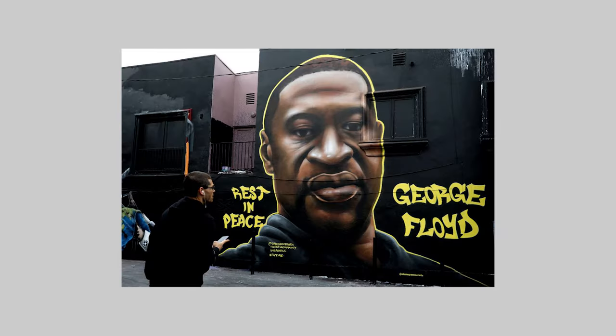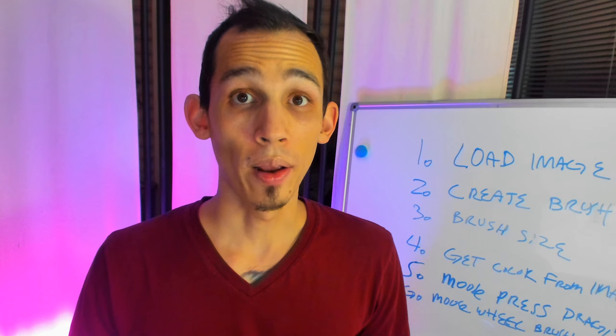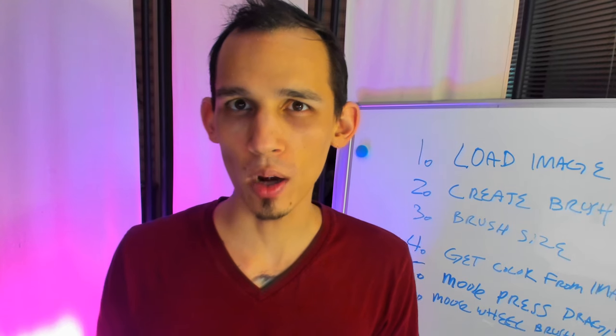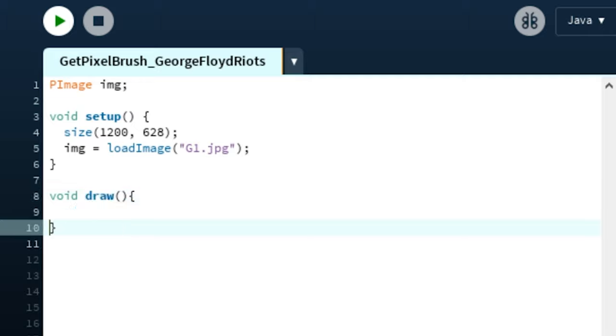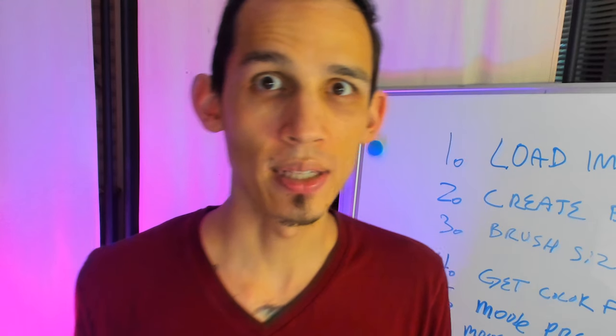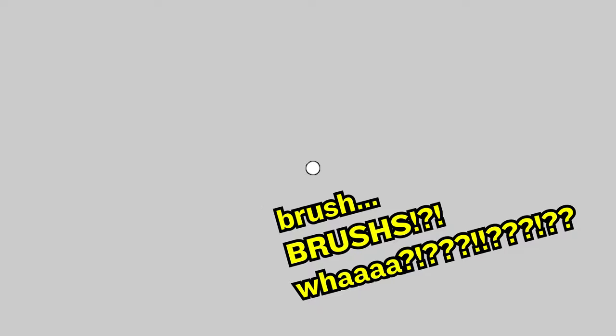Let's make the brush. Computers are dumb, so we have to describe to the computer what a brush is. Let's start with an ellipse. We press play — we have an ellipse. Wait, we still don't have a brush, so what are we missing?